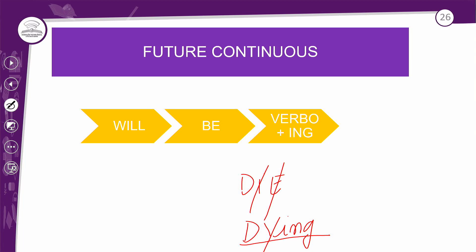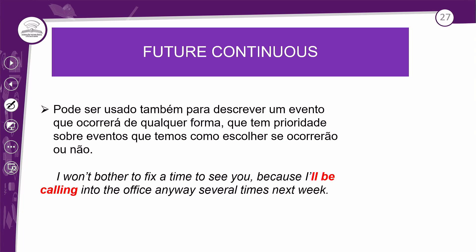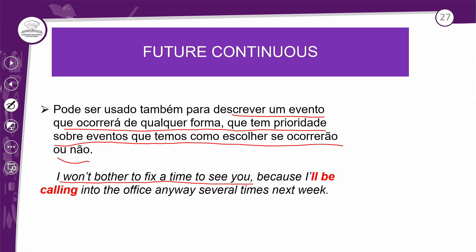Tudo isso a gente viu lá na aula de present continuous — eu só estou dando uma pincelada, uma relembrada. O Future Continuous também pode ser usado para descrever um evento que ocorrerá de qualquer forma, que tem prioridade sobre eventos que temos como escolher se ocorrerão ou não. Por exemplo: 'I won't bother to fix a time to see you, because I will be calling into the office anyway several times next week.' Porque eu estarei ligando para o escritório de qualquer forma, diversas vezes na semana que vem.